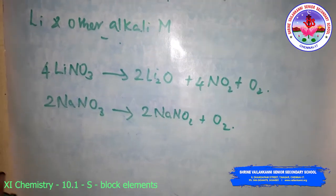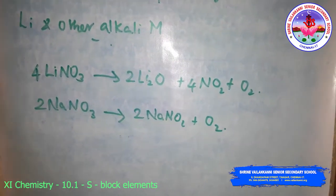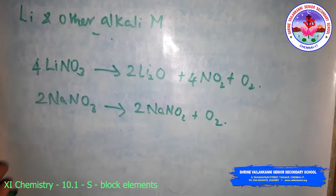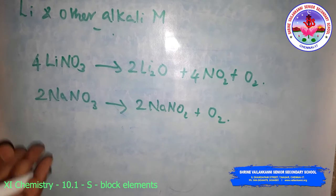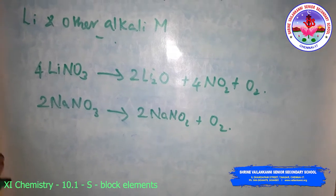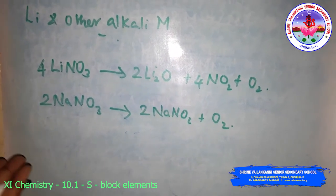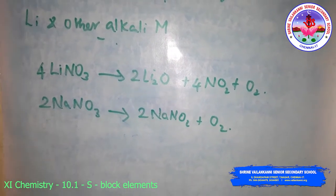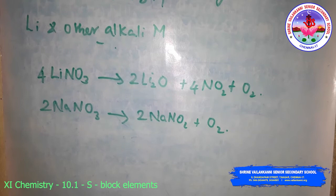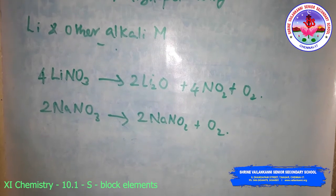The example reactions are: lithium nitrate gives lithium oxide and nitrogen dioxide and O2 on heating. Two moles of sodium nitrate form sodium nitrite and oxygen. The lithium compounds and lithium oxides are comparatively much less soluble in water than the corresponding compounds of the other alkali metals.